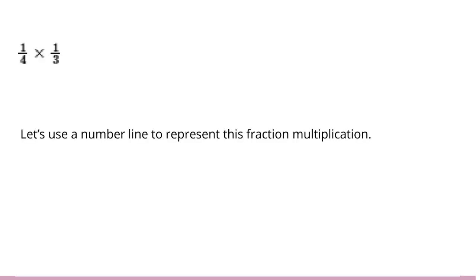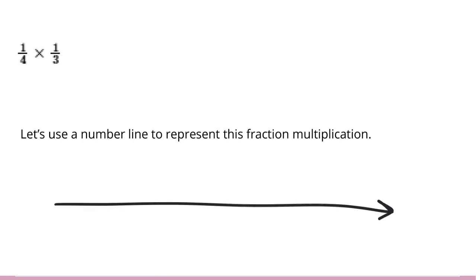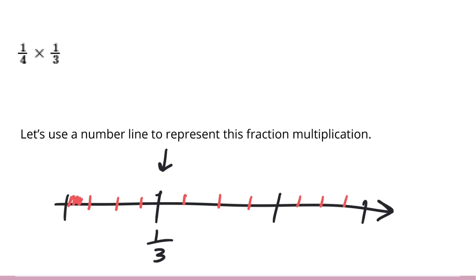Another way to show fraction multiplication is to draw a number line. If I want one fourth of one third, I can draw a number line and show one third. If I cut each third into four parts, one fourth would just be this part right here, which of the whole amount would be one twelfth. So this is one way of representing fraction multiplication on a number line.